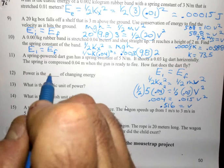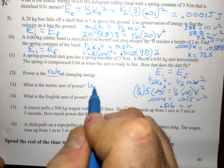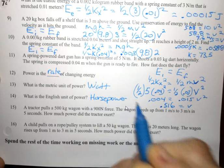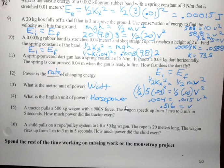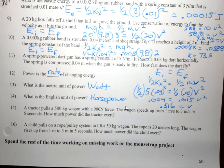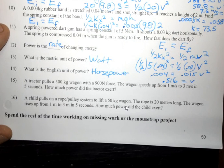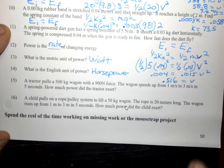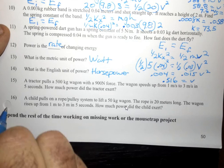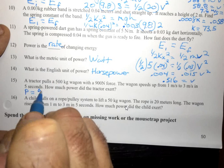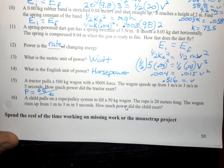Power is the rate of changing energy. And the metric unit of that is watts. The English unit is horsepower. And yes, one horsepower is indeed the power of one horse. They did that with the horses lifting up the crates in the coal mines, lifting up crates of coal. Number 15. A tractor pulls a 500-kilogram wagon with a 900-newton force. The wagon speeds up from 1 meter per second to 3 meters per second in 5 seconds. How much power did the tractor exert? So power, as we said up here, is the rate of changing energy. Whenever you see the word rate, it means that you're going to divide something by time. So the change in energy divided by time.